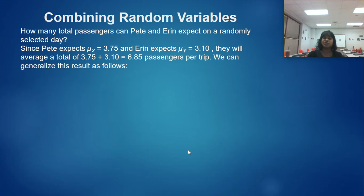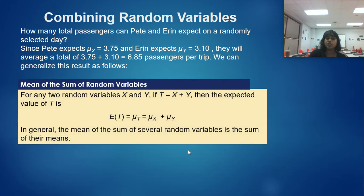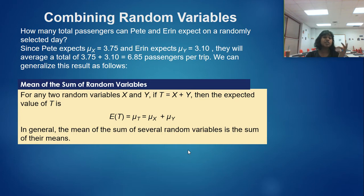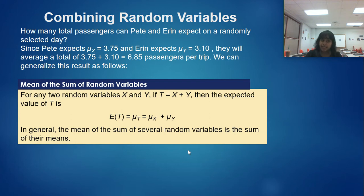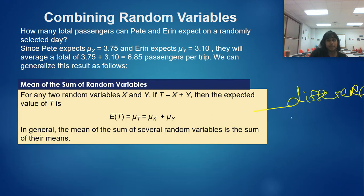What do you notice about how we created E of T — the mean of the T value, the expected outcome of the total passengers? We just added the averages of both. That's literally all we did. Here is the formula for the mean of the sum of random variables: you simply add the means. For a difference, you'd subtract the means instead.